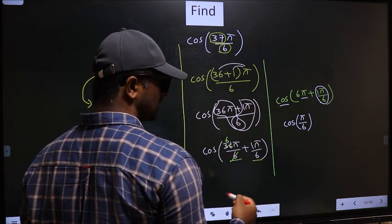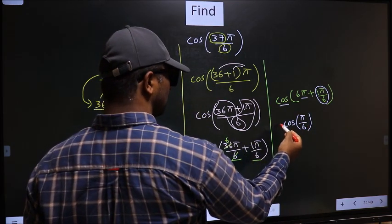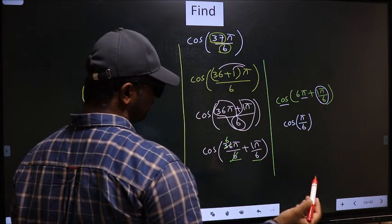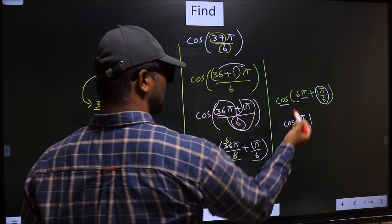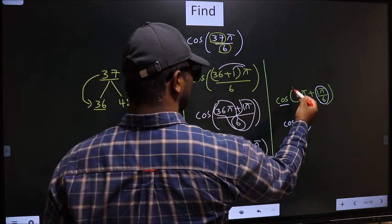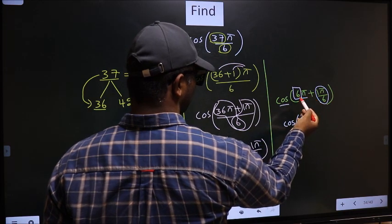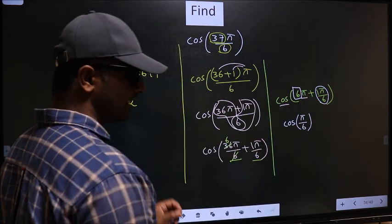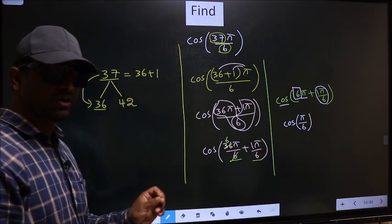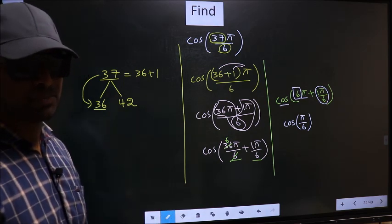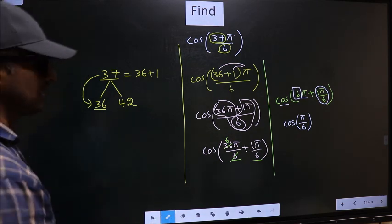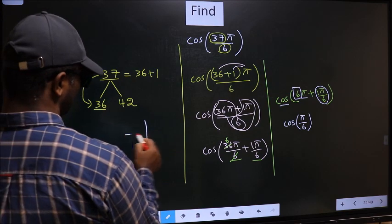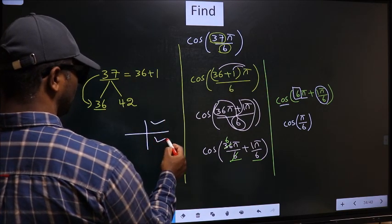Now the question arises - will we get here plus or minus? To answer that, you should look at the number before π, which is 6. 6 is an even multiple, and all the even multiples of π fall in the first or in the fourth quadrant.